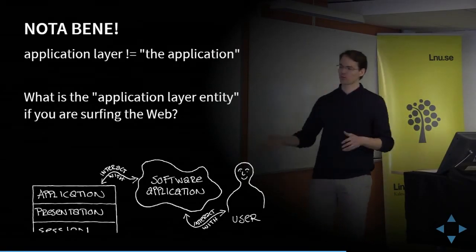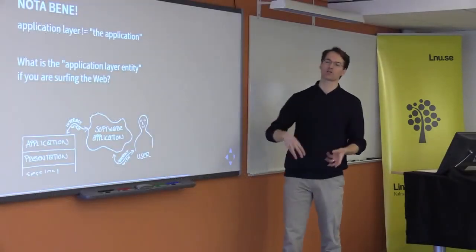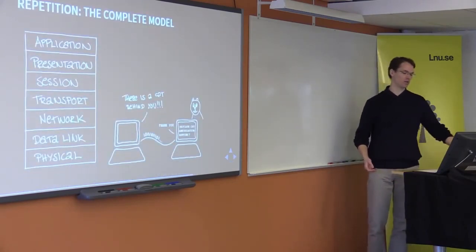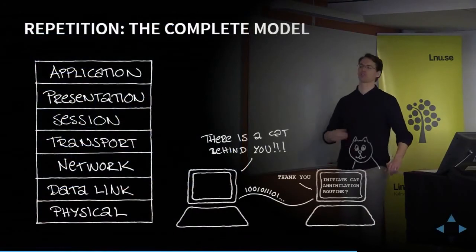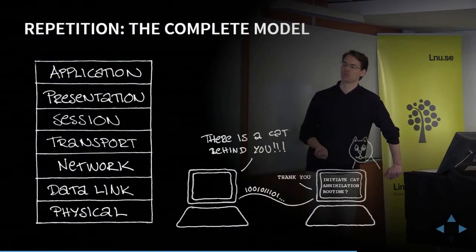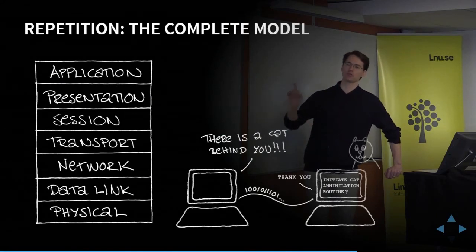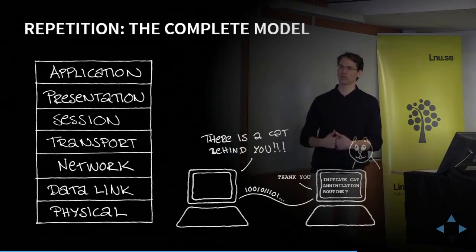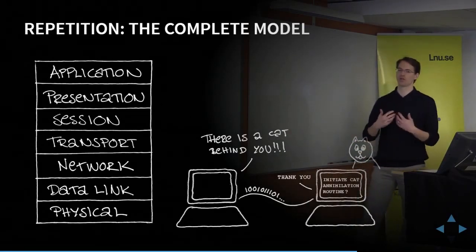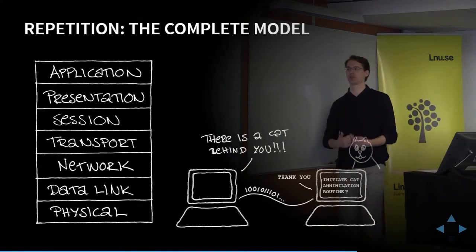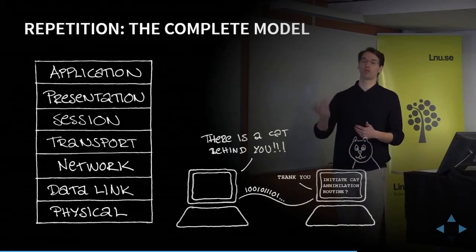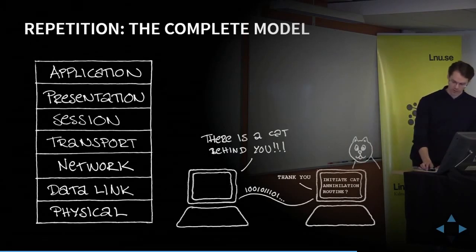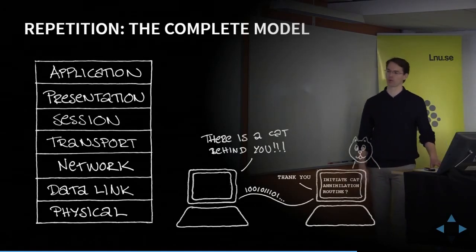You interact with the software application, which interacts with the application layer, which interacts with the presentation layer, then the session layer, transport layer, network layer, data link layer, and finally the physical layer — which puts the message on the wire. At the other end it goes back up: received at the physical layer, moved up through data link, network, transport, session, presentation, and application layer, and then to your application, which either displays a message on screen or does whatever it is programmed to do.